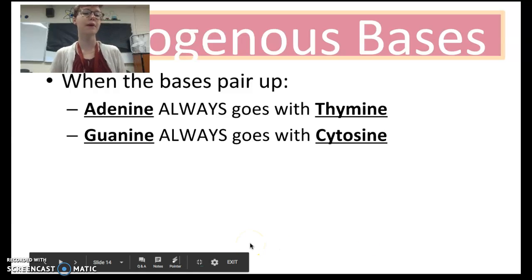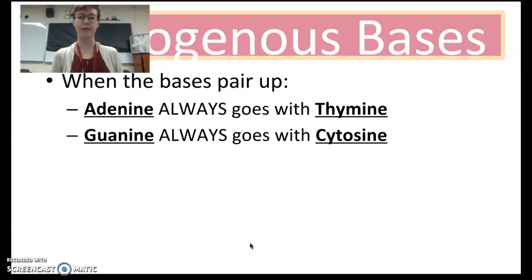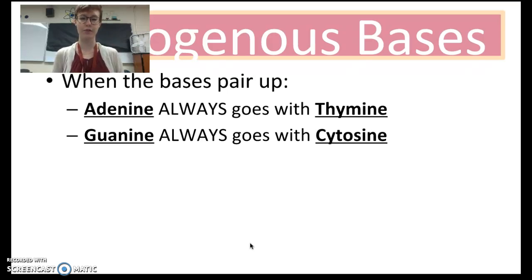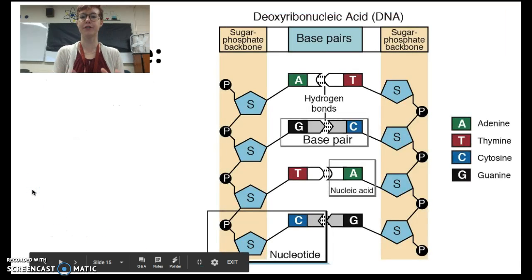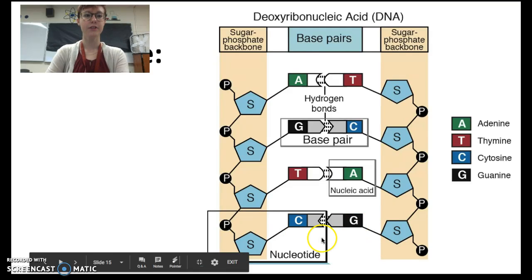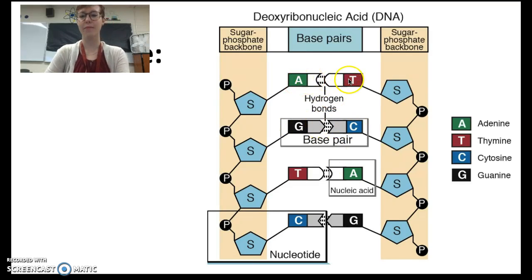When bases pair up, we always put adenine with thymine — we abbreviate this A with T — and we always have guanine with cytosine, or G with C. Here's a picture of what this looks like: this C is cytosine and this G is guanine, and you can see they fit perfectly together, just like puzzle pieces. Here we have thymine and adenine, another guanine and cytosine, another adenine and thymine. It always works this way. This is a rule you have to memorize.